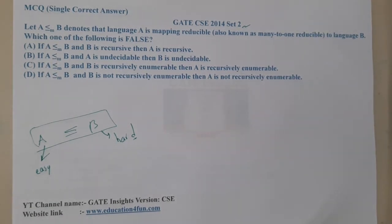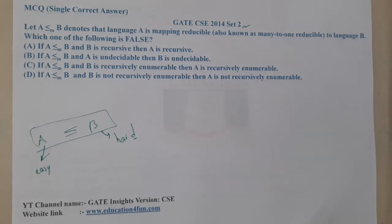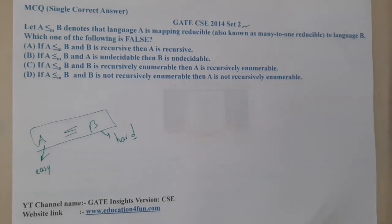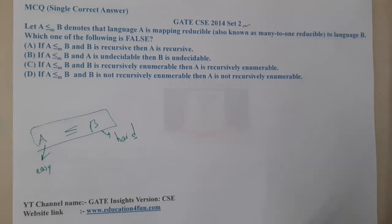Let us check the options. Option A says: if A ≤m B and B is recursive, then A is recursive. Option B says: if A is undecidable, then B is also undecidable. Option C says: if B is recursively enumerable, then A is recursively enumerable.